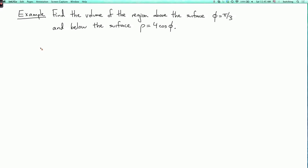Our next example of integration in spherical coordinates is to find the volume of the region which is above the surface φ equals π/3 and below the surface ρ equals 4 cosine φ.